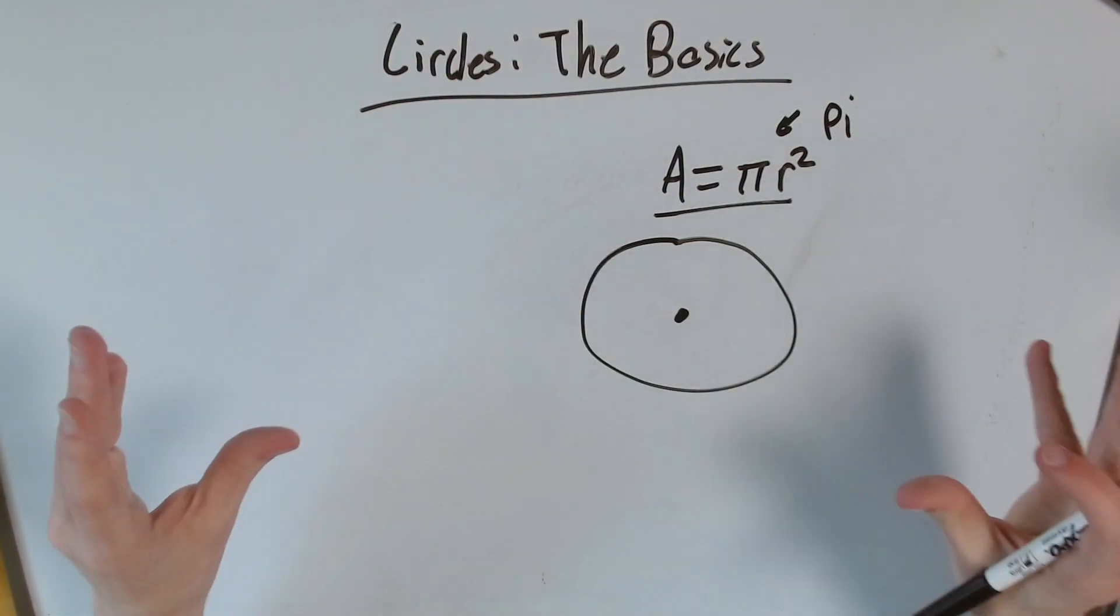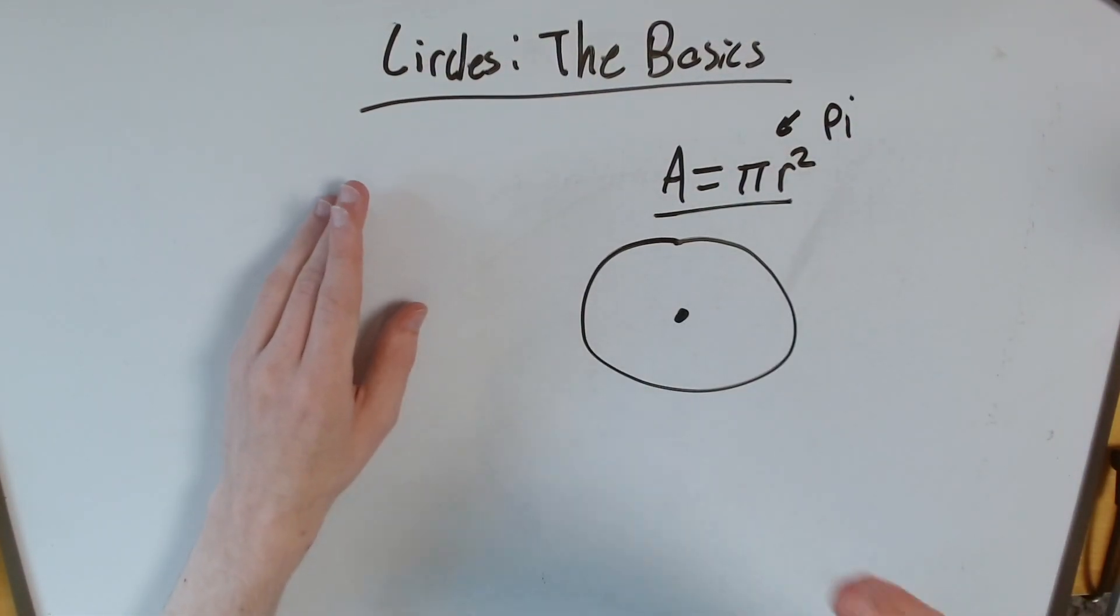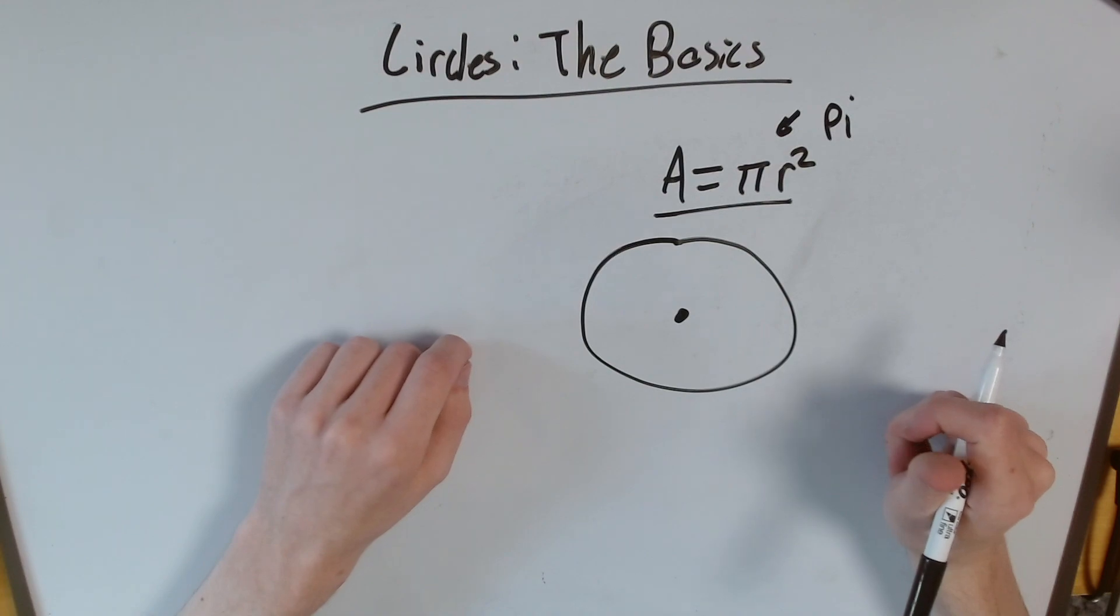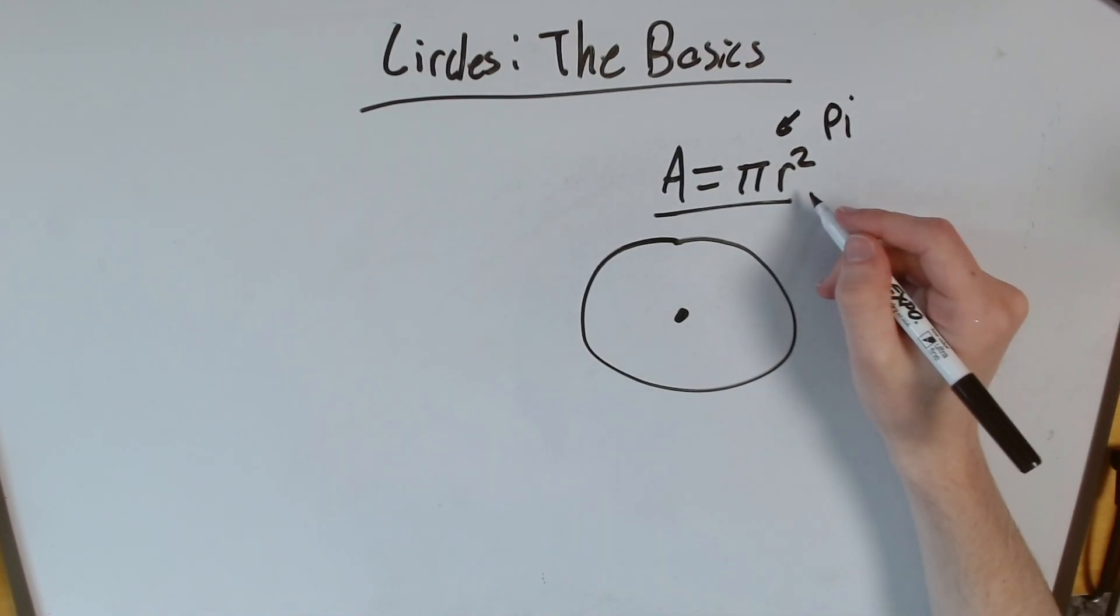And pi is an infinitely long number. It's 3.14159265 on into infinity. It never ends. Another special thing about circles. But what's this radius actually mean?